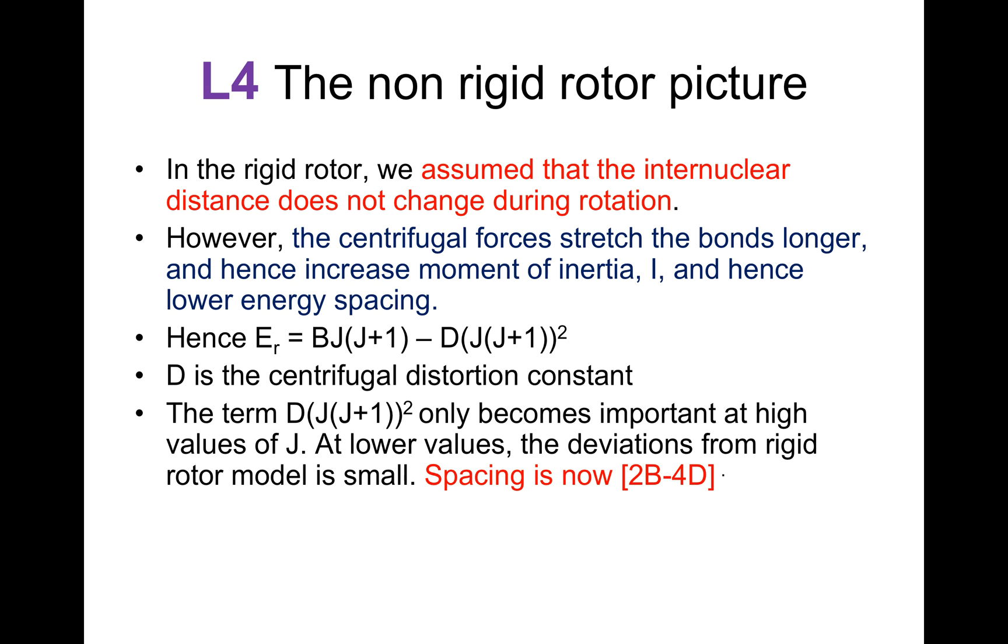At lower values, the deviations from rigid rotor model is small. That means spacing is now 2B minus 4D.